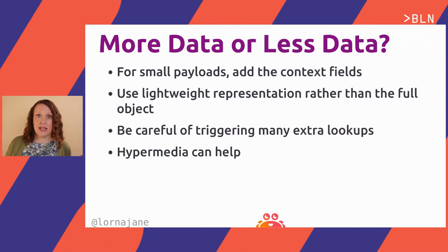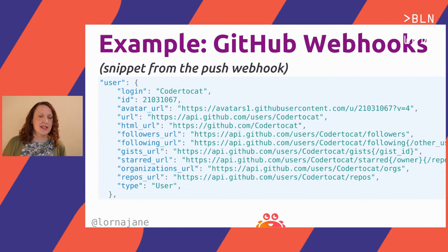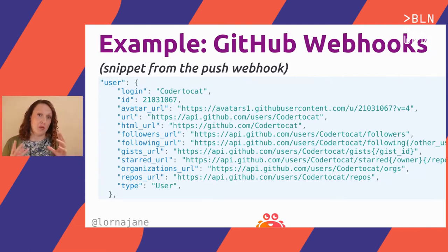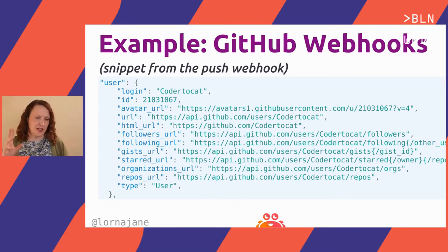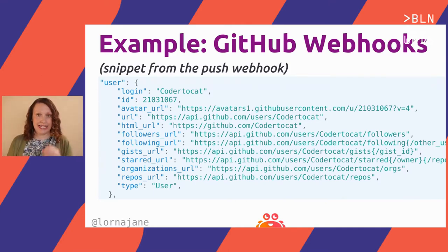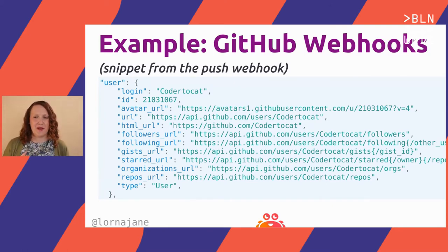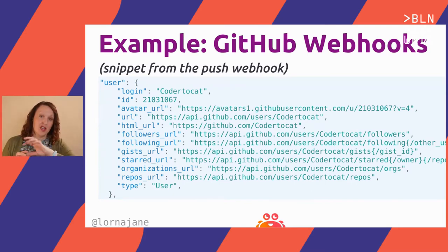A middle ground could be a lightweight representation of the object rather than the whole object — just the key fields, without nested extra data. Sometimes using a hypermedia approach, as we see in APIs, can help to give cacheable links to lookup data. As an example, I've borrowed from the GitHub push webhook: it's not the whole user data object, but it includes the username, profile link, avatar URL, and other useful bits. It's not everything, but it's enough data for 80% of the use cases — displaying a list of who pushed what in a commit.